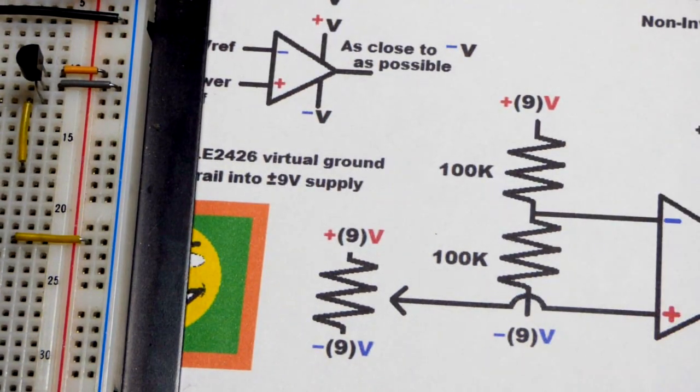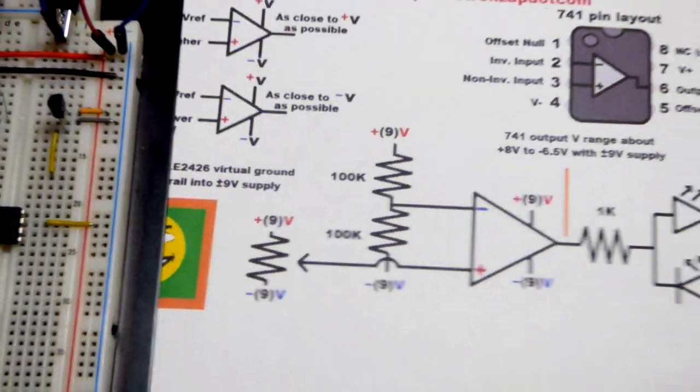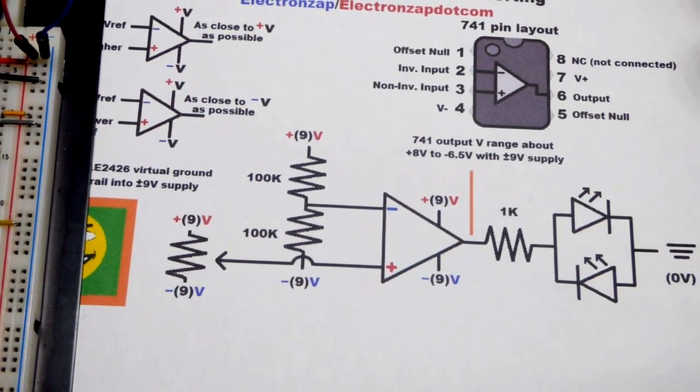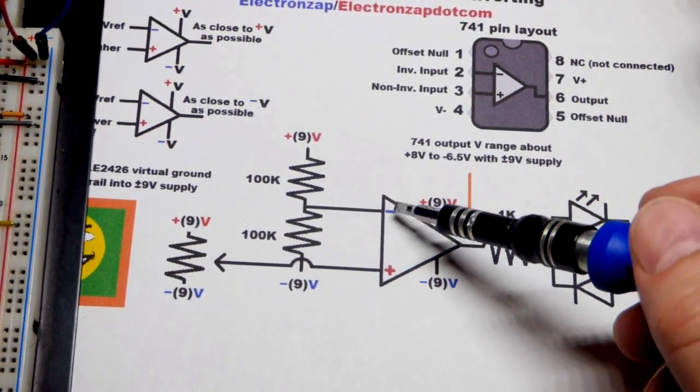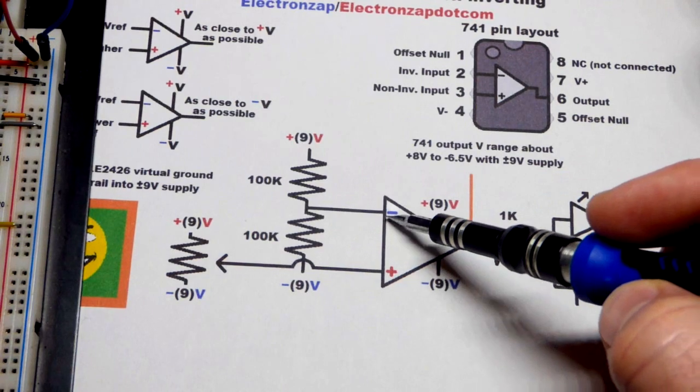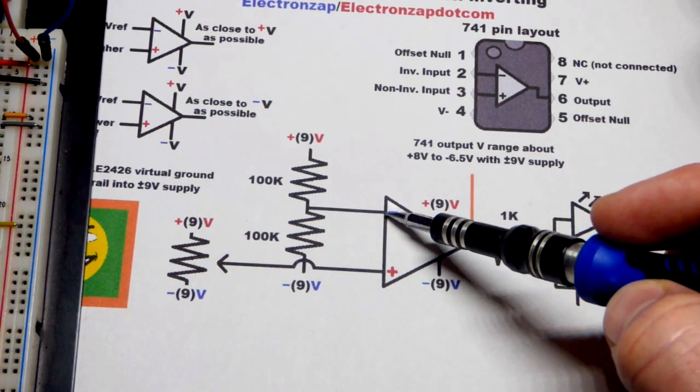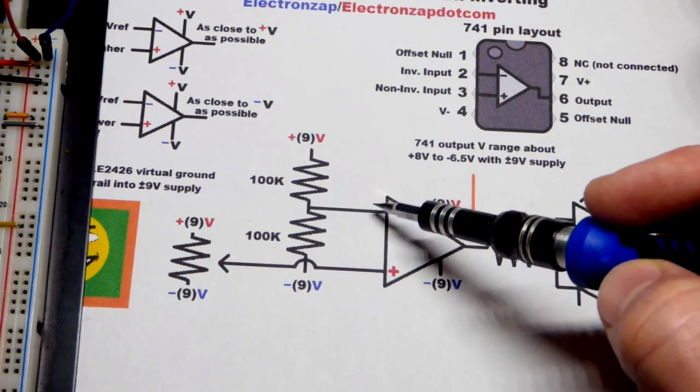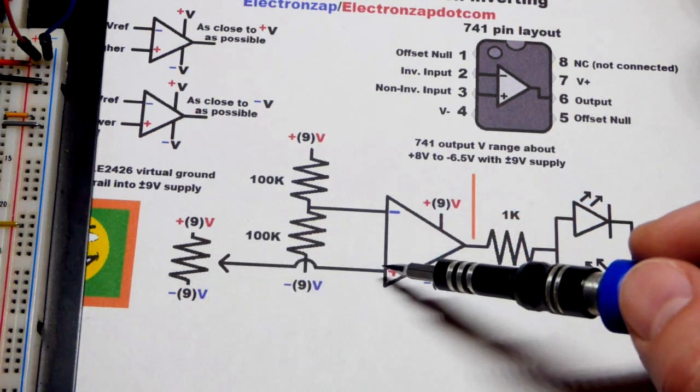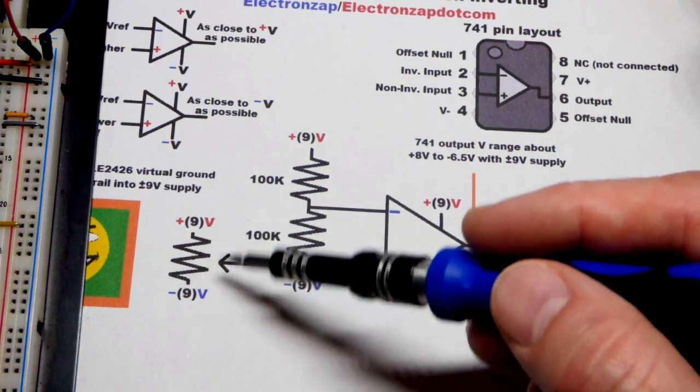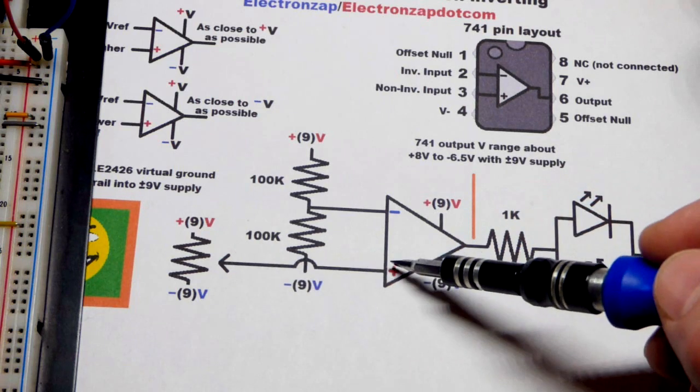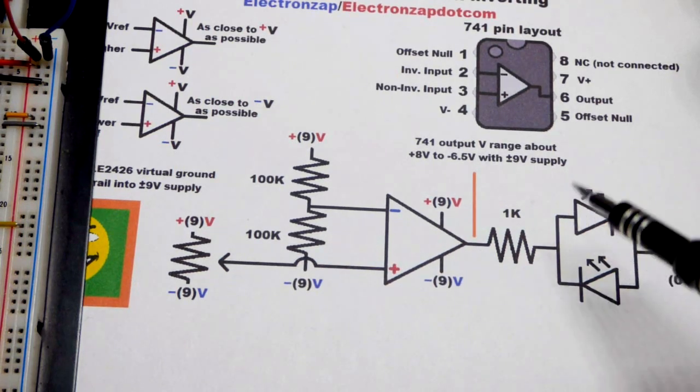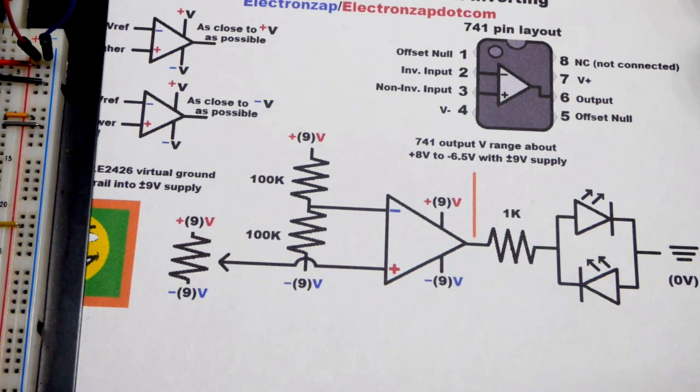With no feedback, you get all the amplification that the op amp can provide, which is limited to the rails. That amplification is either to the positive rail or the negative rail, as close as it can get.